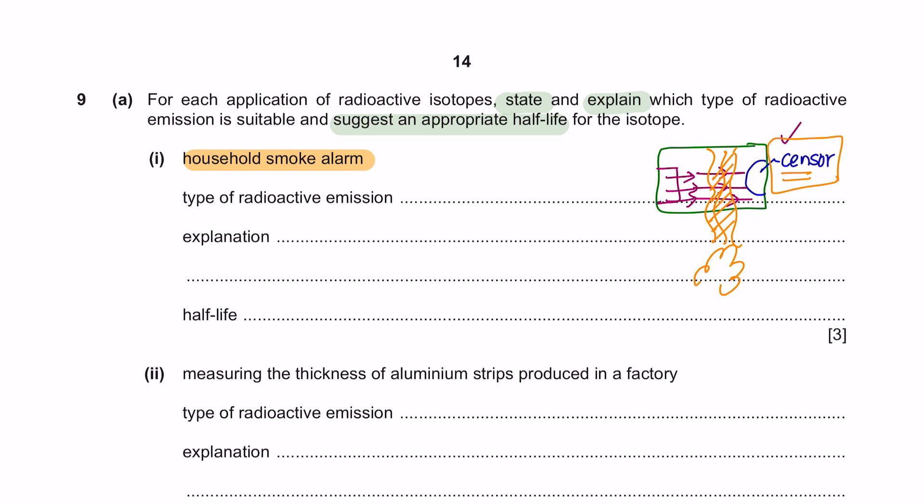The type of radioactive emission that should be used here should be something which could be easily blocked. An emission which is easily blocked is an alpha particle. Alpha particles are not very penetrating, just smoke could block the emission from reaching the sensor. As for the half-life, any value from 10 years to 500 years is an acceptable answer.